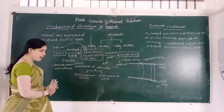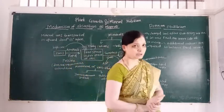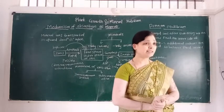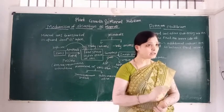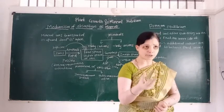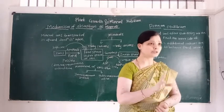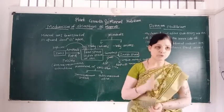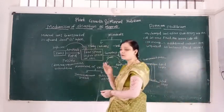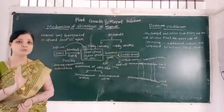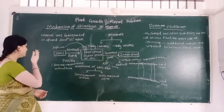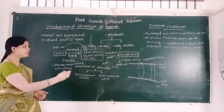Mineral absorption takes place by the vascular tissue known as xylem. In the eleventh standard, we learned about different kinds of plant tissue — the complex plant tissue, that is water-conducting tissue and food-conducting tissue, known as xylem and phloem. Remember: mineral ions are transported upward through the xylem tissue.